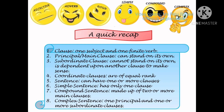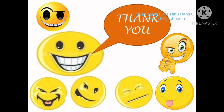A quick recap: a clause has one subject and one finite verb. The main clause can stand on its own; the subordinate clause cannot. Coordinate clauses are of equal rank. A sentence can have one or more clauses. The simple sentence has only one clause. The compound sentence has two or more main clauses. The complex sentence has one main clause and one or more subordinate clauses.